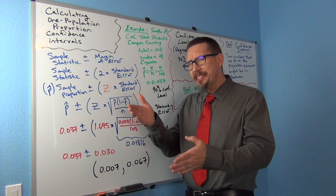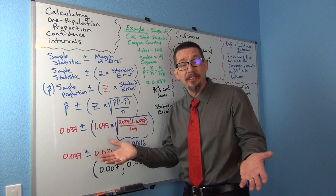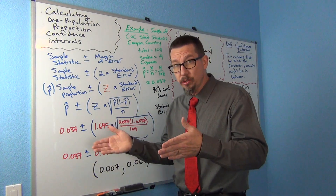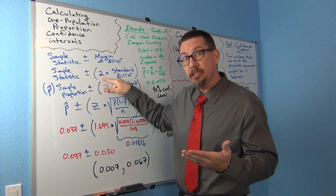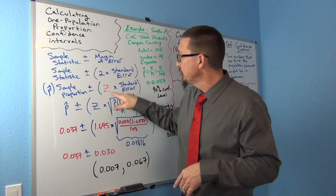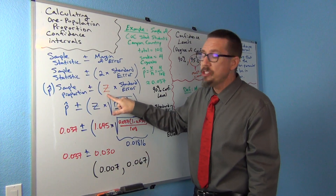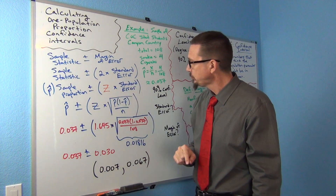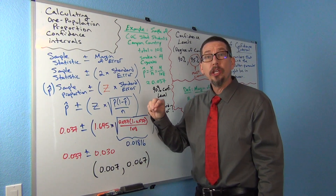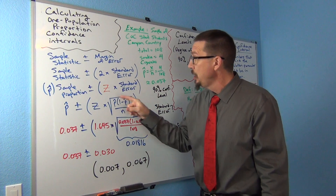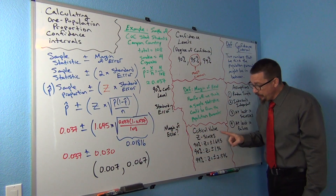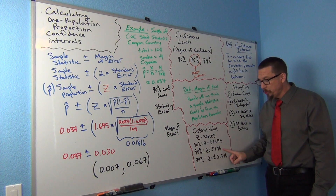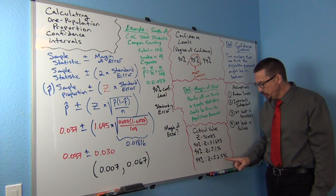The number of standard errors is really a z-score — z-scores represent how many standard errors away you are. So this 'two' could be thought of as a z-score, and the formula adapted to: z-score times the standard error. Now we can use the z-score for 95%, 90%, or 99% when calculating our confidence interval. The critical value z-scores are: 1.645 for 90%, 1.96 for 95%, and 2.576 for 99%.